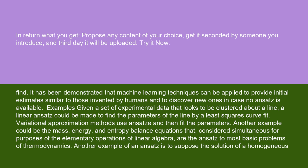Examples: given a set of experimental data that looks to be clustered about a line, a linear ansatz could be made to find the parameters of the line by a least squares curve fit. Variational approximation methods use ansätze and then fit the parameters.